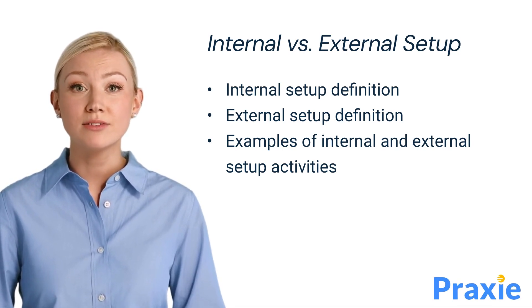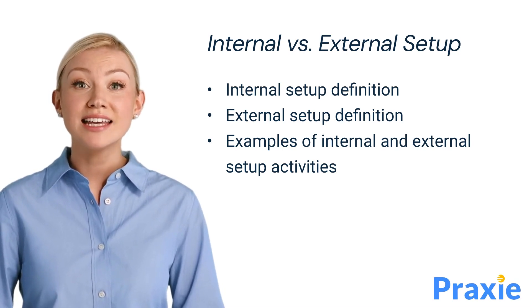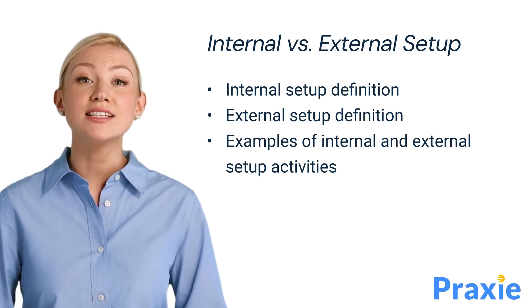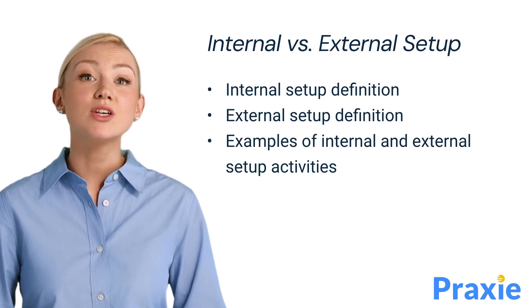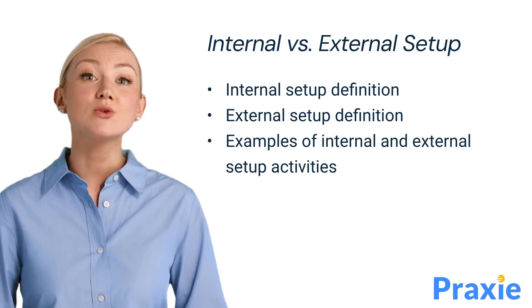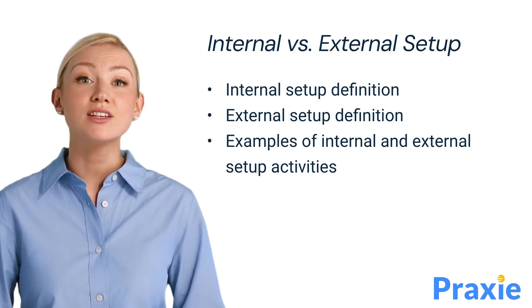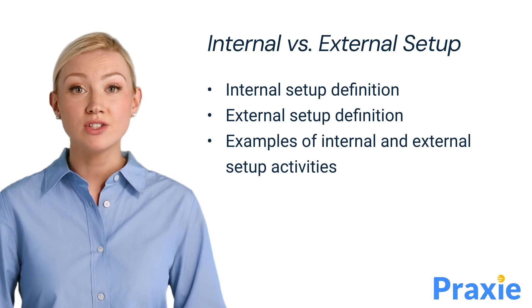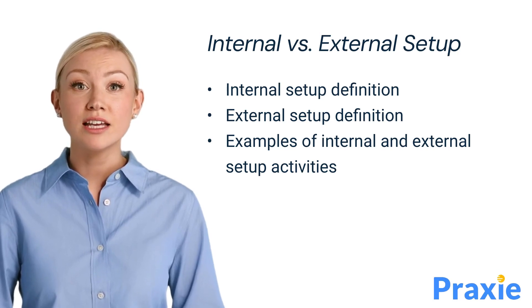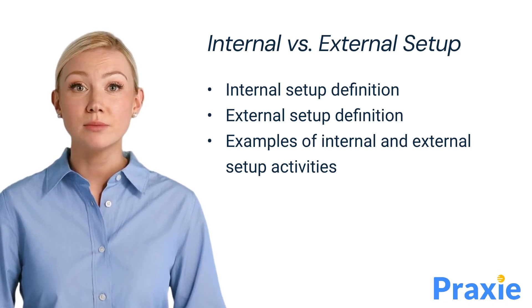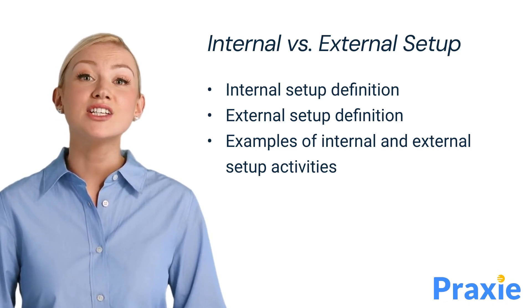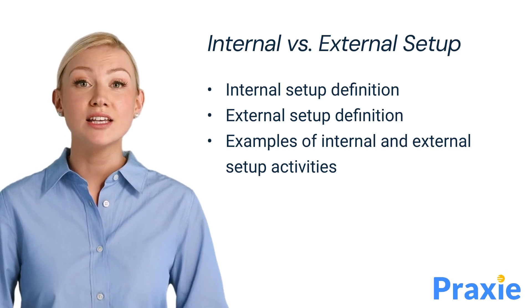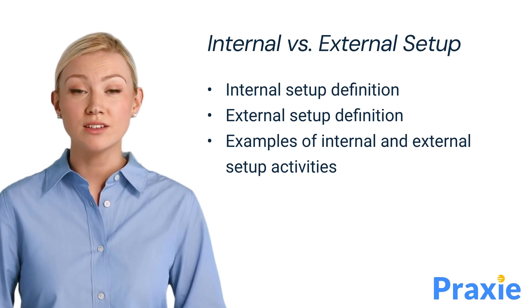External setup definition: activities that can be done while the machine is still running. Examples include preparing tools, gathering materials, or setting up the next batch of parts. An example is prearranging the next set of tools and materials while the machine is still in operation.